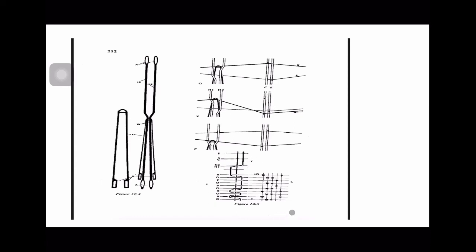In this weave repeat diagram, the sequence is: open shed, crossed shed, open shed, crossed shed, open shed, plain shed, open shed, plain shed, open shed, and crossed shed. The heel frames shown are H1, H2, C, S, and E — where E is the easer.